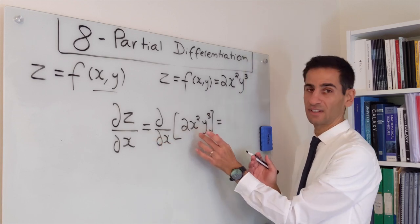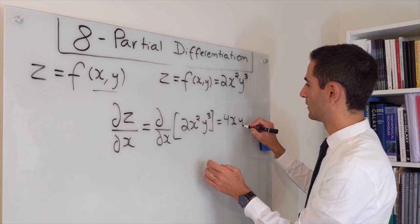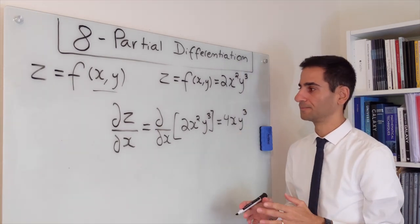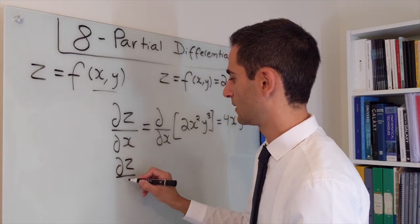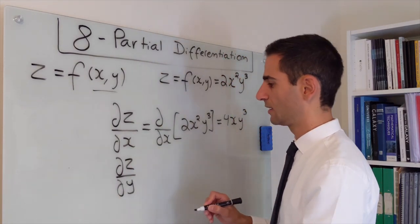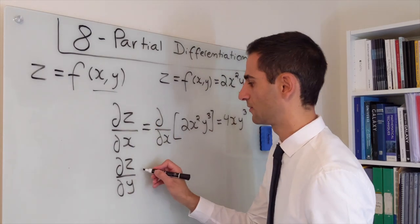And we end up having 4xy³. If instead we want to differentiate z in respect to y, it implies that we are now keeping x fixed.